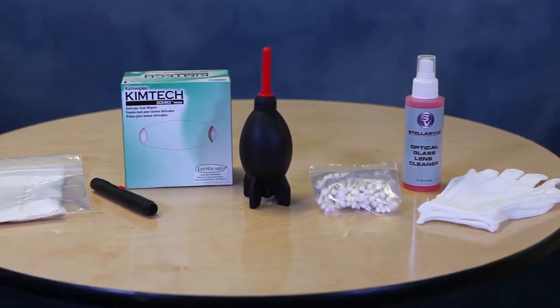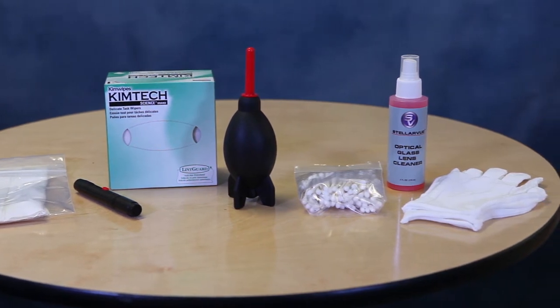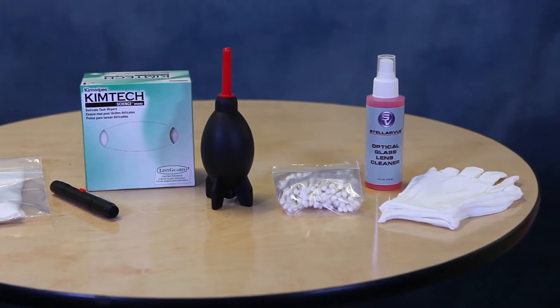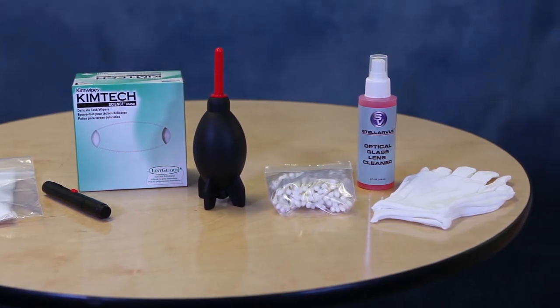A large bulb blower, cotton swabs which we recommend for cleaning your eyepieces, Stellarview lens cleaner, and inspection gloves, rubber gloves, or finger cots. All of these items are included in our complete optical cleaning kit available on the accessory page of our website.